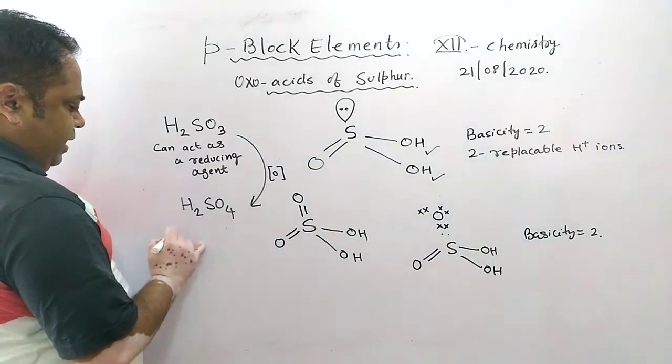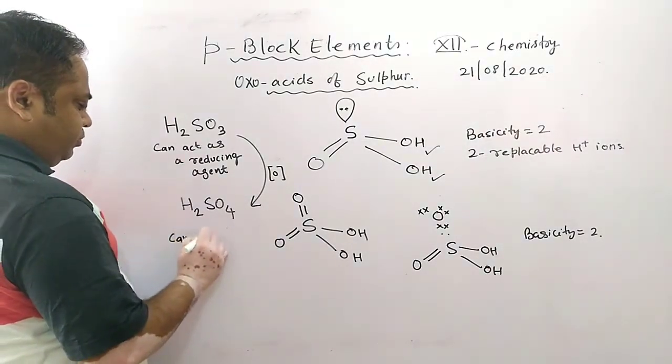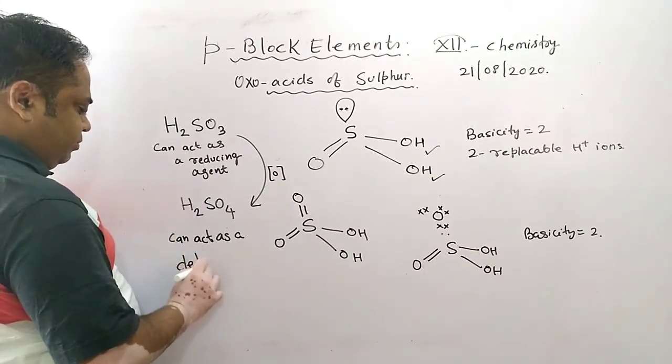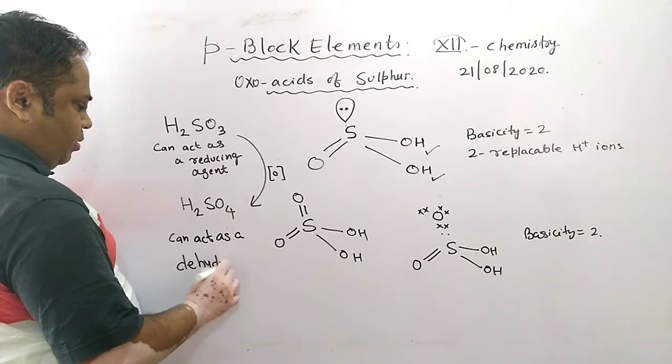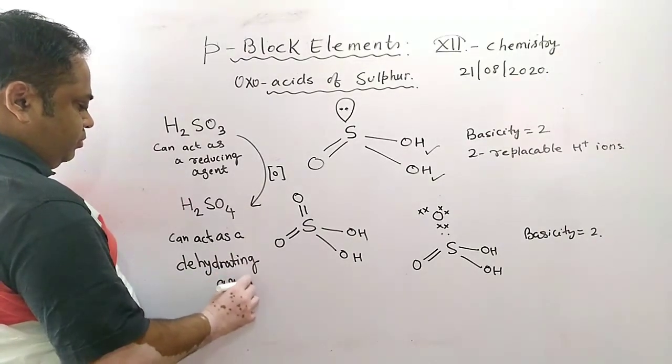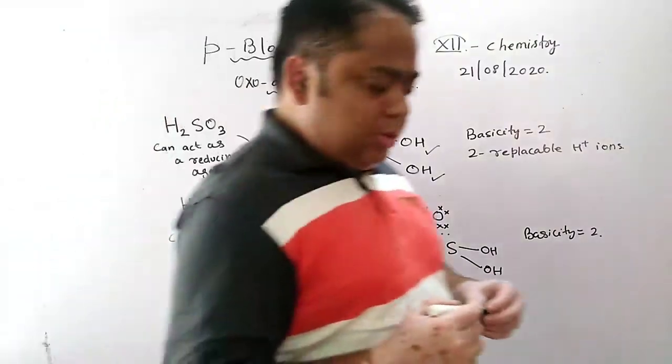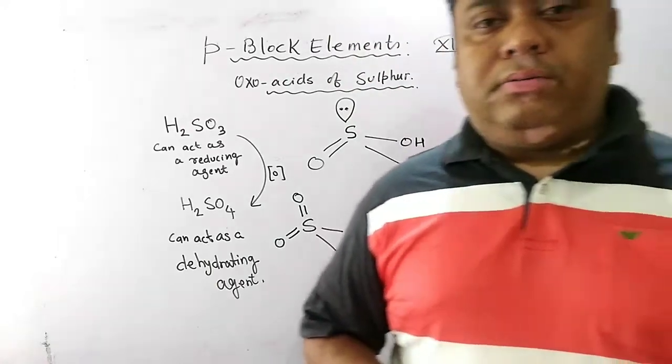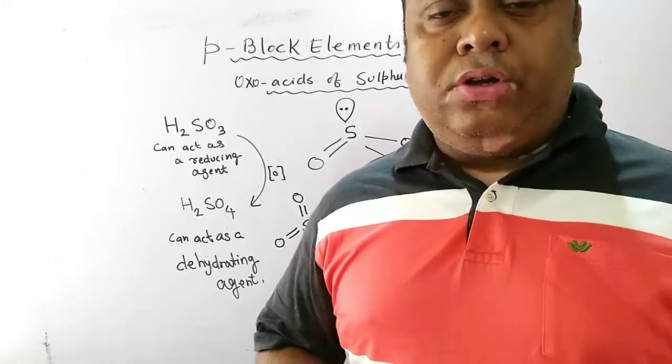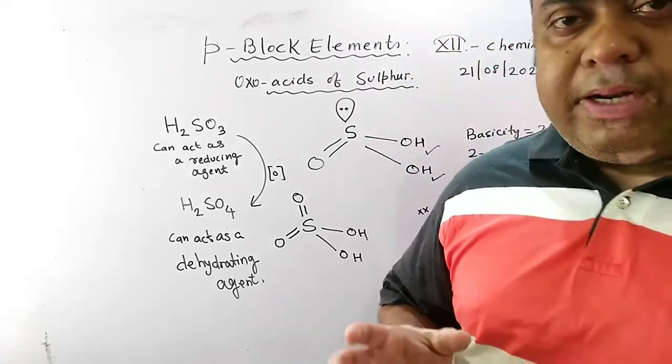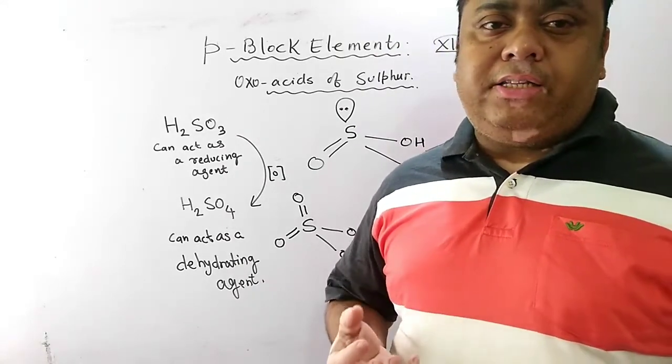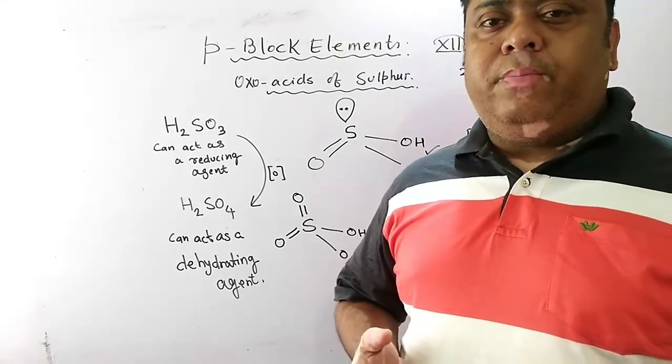But H2SO4 acts as a good dehydrating agent. Since H2SO4 is a good dehydrating agent, it is used for charring of sugar. If you put any carbohydrate in concentrated H2SO4, it takes out the H+ and OH- ions and water comes out. When water comes out, only carbon is left and the black colored char is seen.